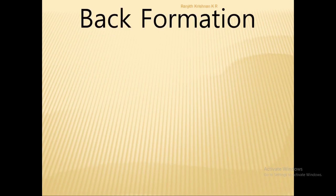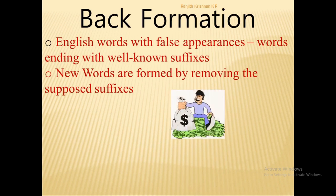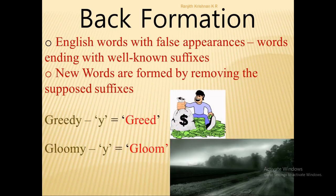The next process of word formation is back formation, in which English words with false appearances occur. If affixation means forming a word by adding an affix, back formation is the reverse — a new word is created by removing the supposed affix from an already existing word. For example, the original word 'greedy' gave rise to the new word 'greed,' and 'gloomy' gave rise to 'gloom.'